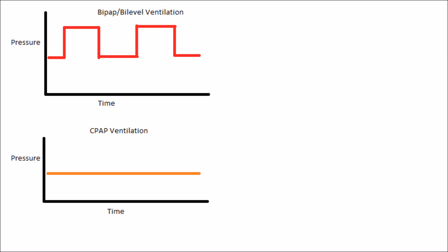The difference of BiPAP versus CPAP: CPAP has one pressure level, while Bi-Level or BiPAP has two pressure levels, which can be coordinated to the patient's breathing to perform better ventilation.